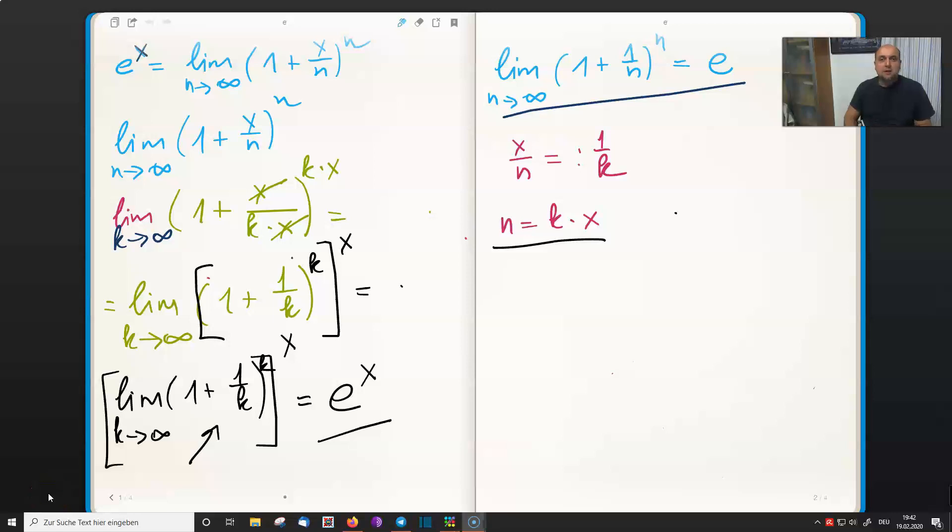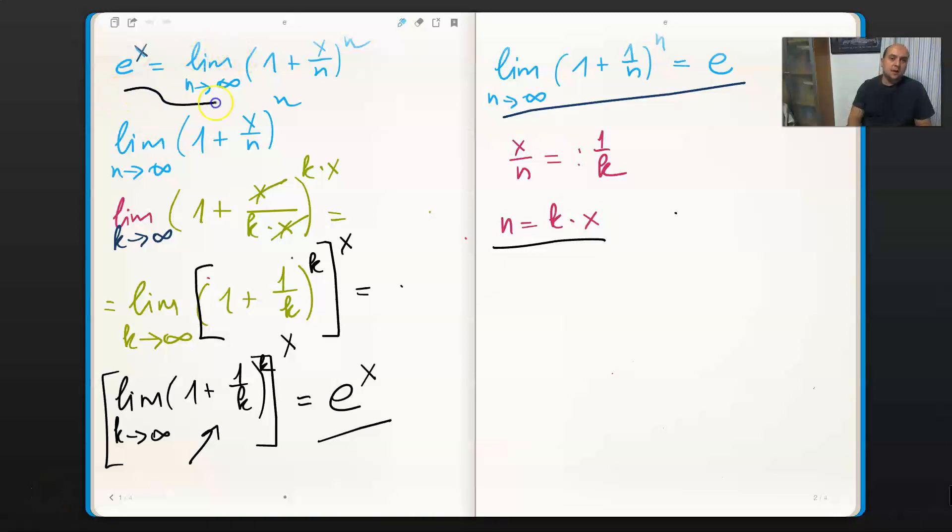Hello guys and welcome to my channel. In today's video I would like to explain why e to the power of x is equal to the limit of 1 plus x divided by n to the power of n. So let's see.